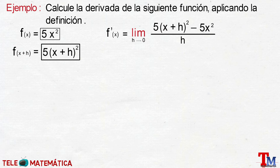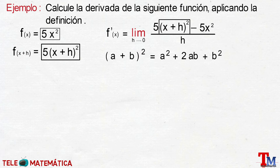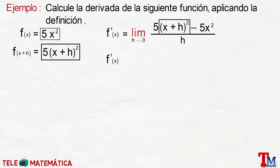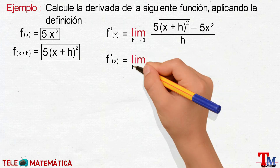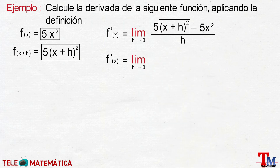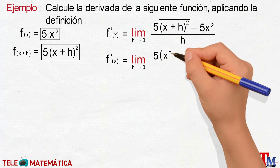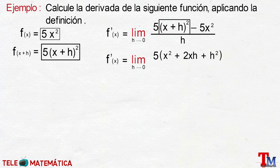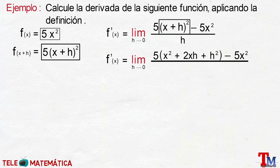Luego, reemplazando la suma de un binomio al cuadrado, aplicaremos el producto notable, que nos quedaría que la derivada de la función va a ser igual al límite cuando h tiende a 0, de 5 que multiplica a x elevado al cuadrado más 2xh más h al cuadrado, menos 5x elevado al cuadrado, y todo dividido para h.